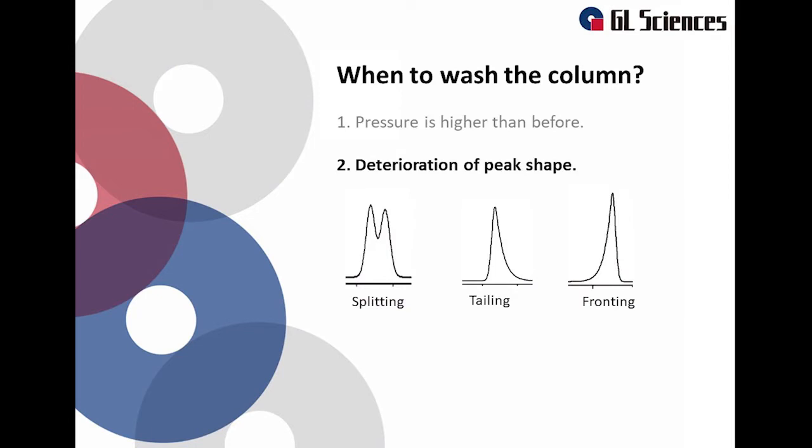The second case is when the peak shape deteriorates. Examples are split peaks, tailing peaks, and fronting peaks. These symptoms can be caused by dirt being adsorbed on the column. This can change the retention. The target component can be adsorbed by the dirty part. In this case, we have to wash the dirt from the column.